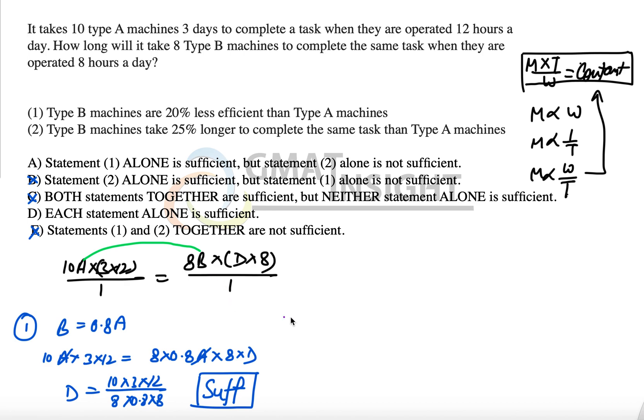Now the second statement says that Type B machines take 25 percent longer to complete the same task than machine A takes. Okay, the time of machine B, that means B takes 1.25 time then machine A takes.